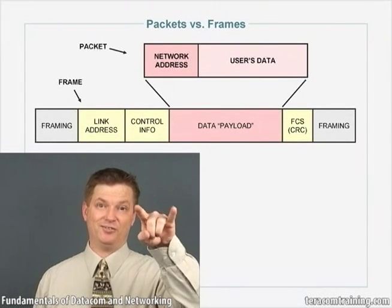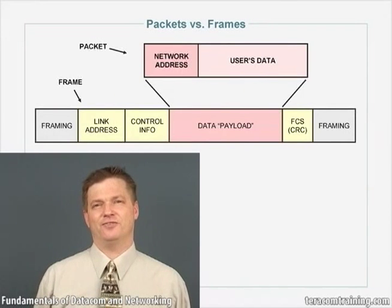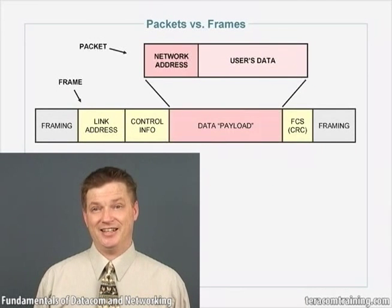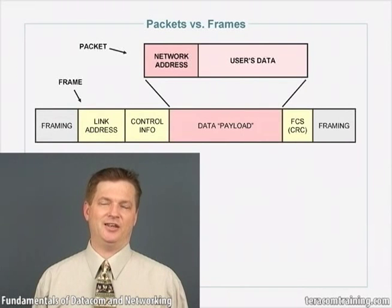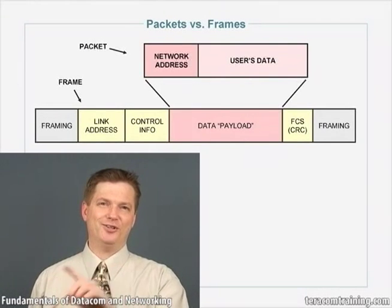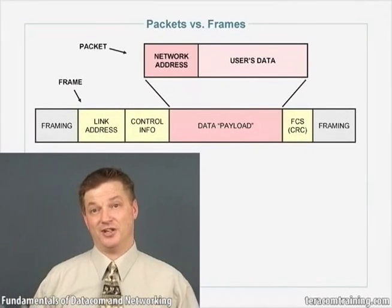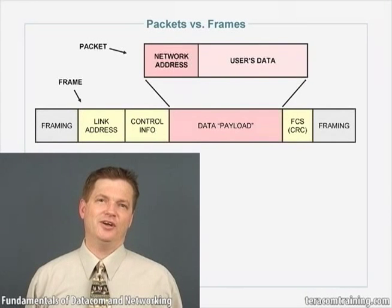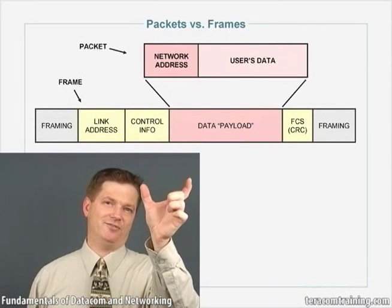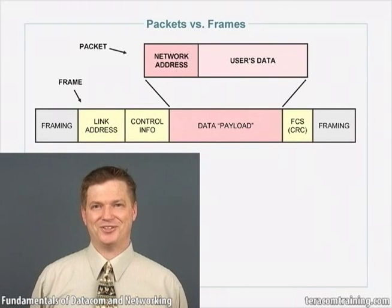The purpose of a packet is to be a chunk of your message — like a piece of an email — with a network address on the front. The network address is the final destination address. This is the information that all network equipment, like routers, look at and use as the basis for making routing decisions. So we move a packet from one computer to another by putting it inside a frame, moving the frame across, and re-transmitting if something goes wrong. Once the frame passes its error check, we extract the packet, give it to the network software, and look at the network address to figure out how to route it.